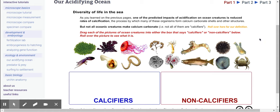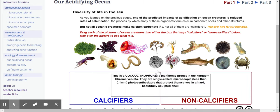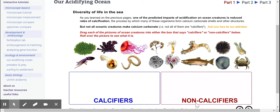This is the data section for Part F, Diversity of Life in the Sea. We're going to take each one of these organisms and classify them either as a calcifier or a non-calcifier.